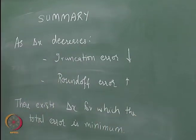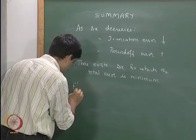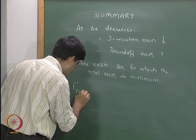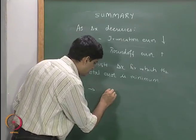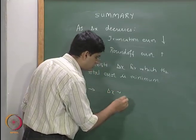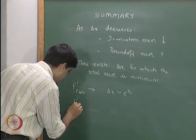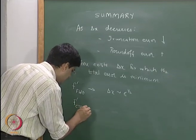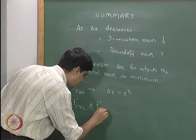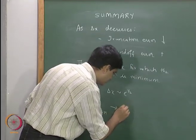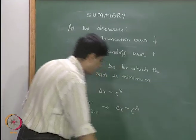For forward difference, for the forward difference formula, our delta x has to be proportional to epsilon to the power half. For f dash using central difference or f dash using 3 point forward difference, delta x is proportional to epsilon to the power 1 by 3.